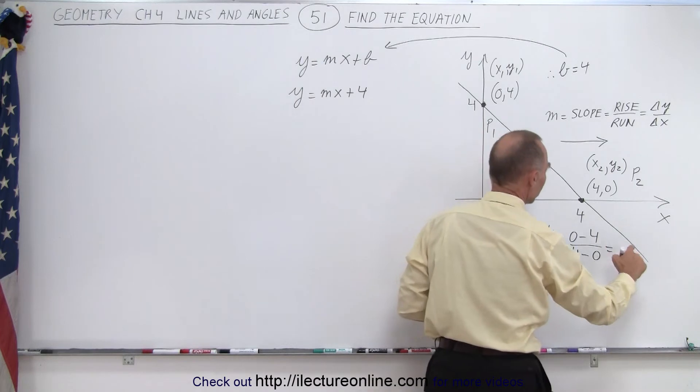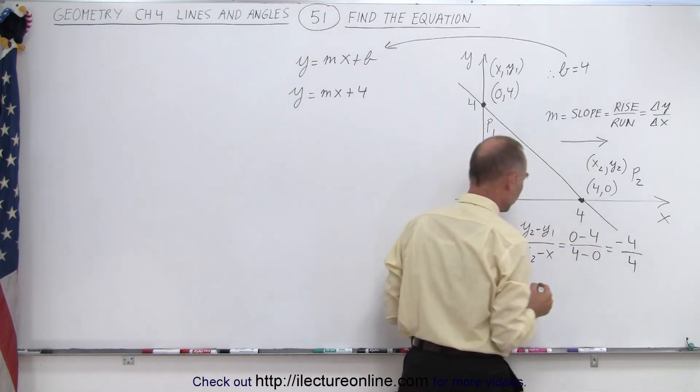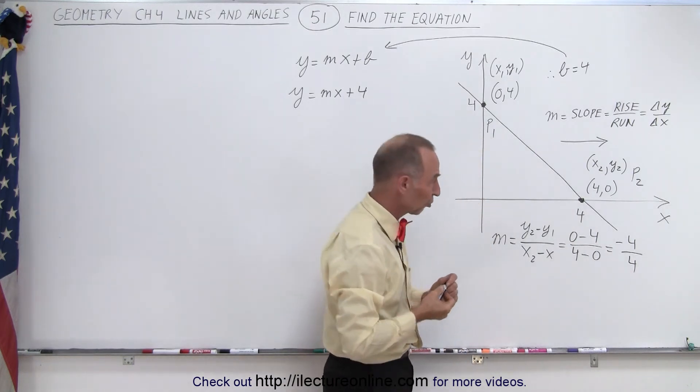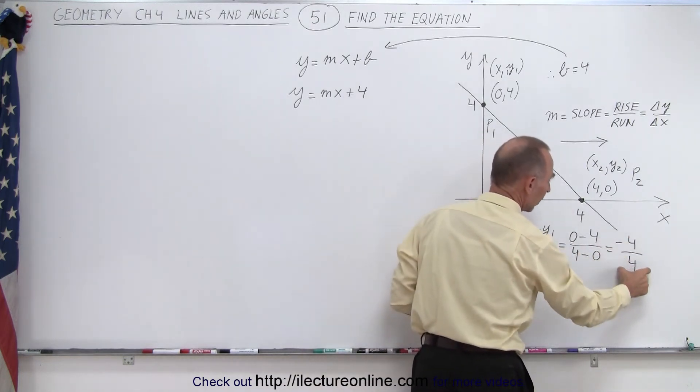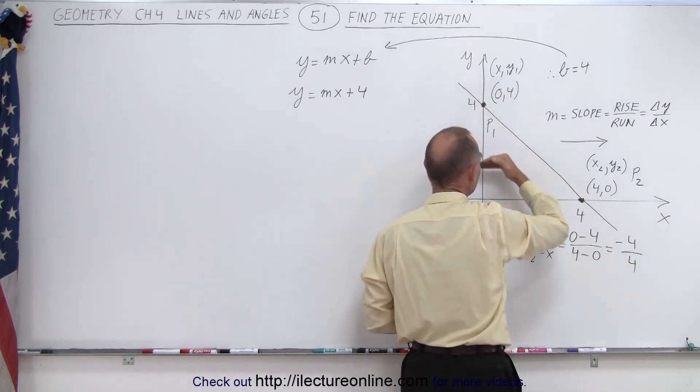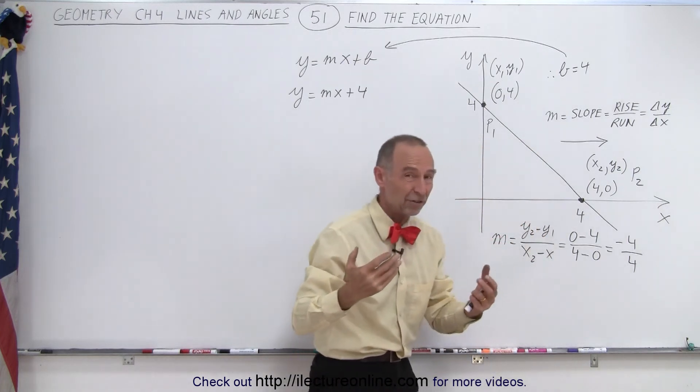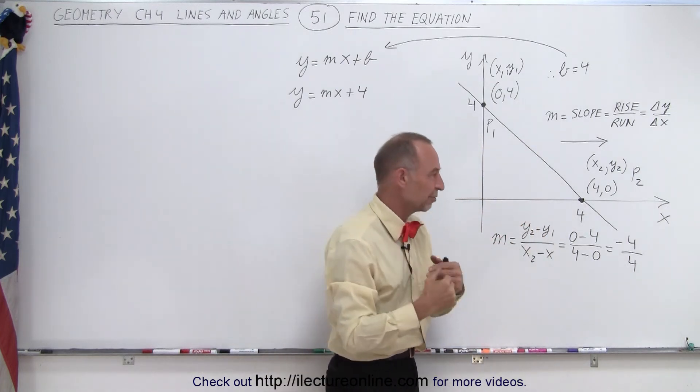So this is equal to minus 4 divided by 4. Now notice that again, the slope is the rise over the run. And notice the rise is actually negative, which means we dropped in height, went from a higher point to a lower point. So the rise is essentially a drop. It's a negative rise.